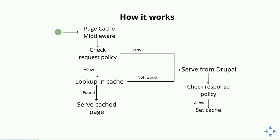To debug this and make it work for you, you need to understand how this module works. Page cache in Drupal 8 is implemented as a middleware. When your request comes in, there are a bunch of Symfony framework middlewares, and one of those is the page cache middleware. This component tries to see if you can get the page from cache, and if you can, it will serve it.